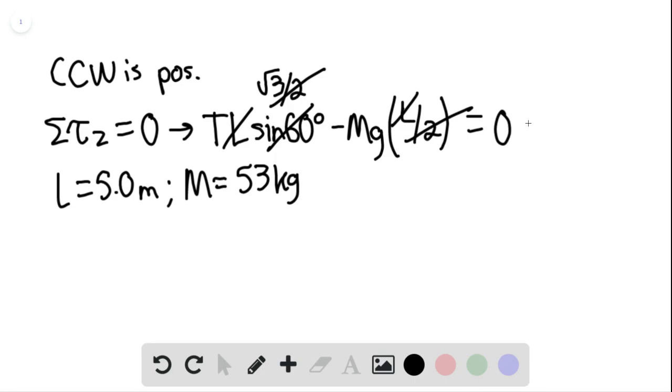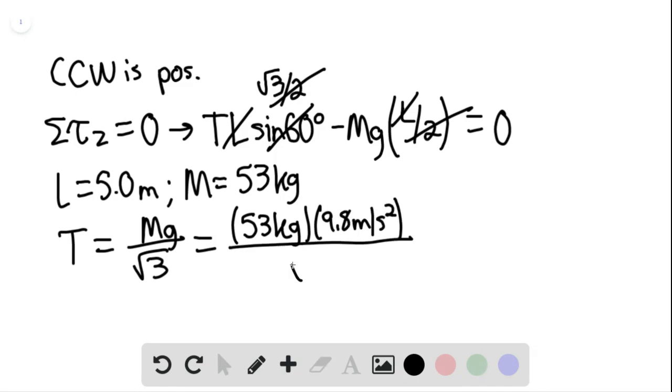The other side simply remains constant at zero, and so we find that T equals mg divided by radical 3. So this would be 53 kilograms multiplied by 9.8 meters per second squared, divided by radical 3, equaling 300 newtons.